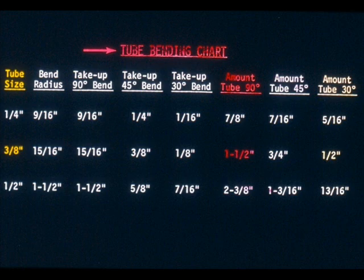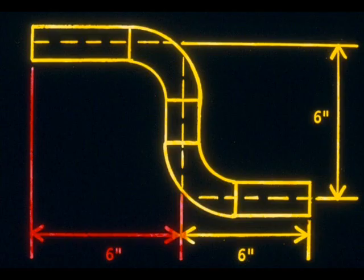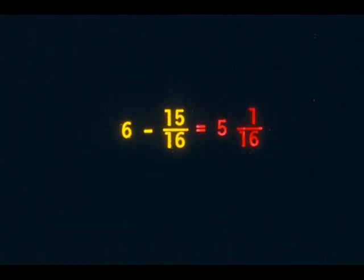Another ninety-degree bend requires another inch and a half, the same as the first bend. So you will measure an inch and a half from the third mark and make your fourth mark — this shows you where the second bend ends. The final leg is also six inches and it only has a bend on one end. Therefore, you will subtract the take-up only once: six inches minus fifteen-sixteenths equals five and one-sixteenths, the length of the final leg.